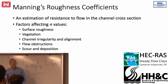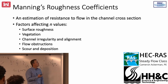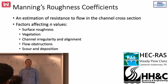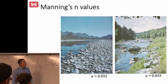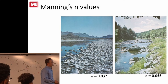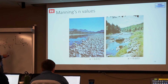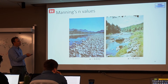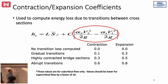Manning's roughness coefficients are used to compute friction losses. Factors affecting them include bed roughness, vegetation, channel irregularity, sinuosity, flow obstructions, and scour and deposition. For example, an arid southwest channel might have n≈0.032; with water up into vegetation, n might rise to about 0.03–0.04; a mountain stream might be around 0.055. More detail on Manning's n selection will be covered tomorrow.